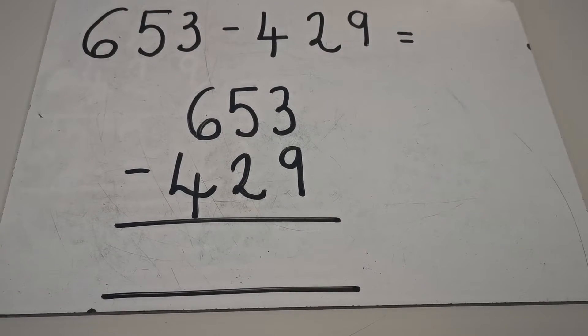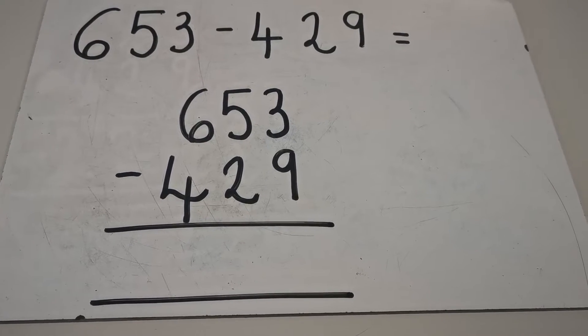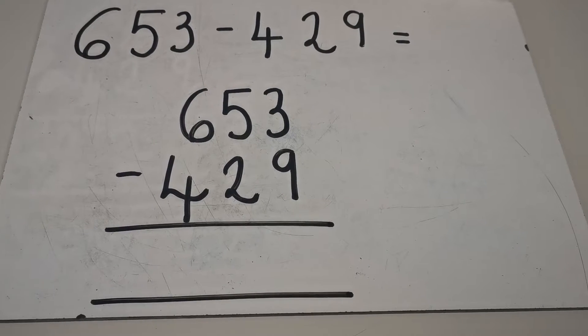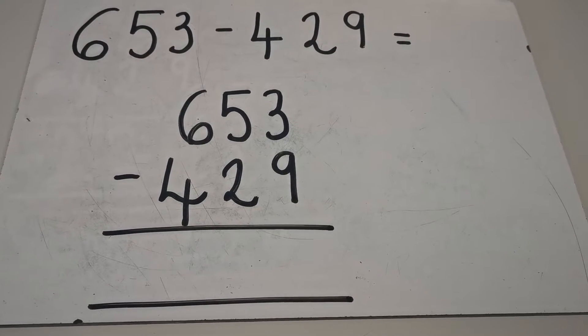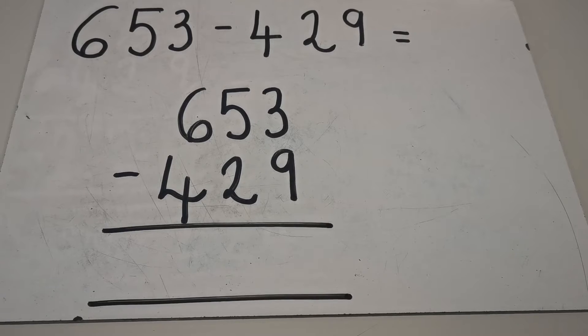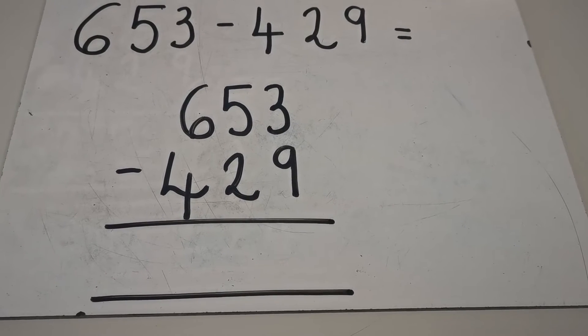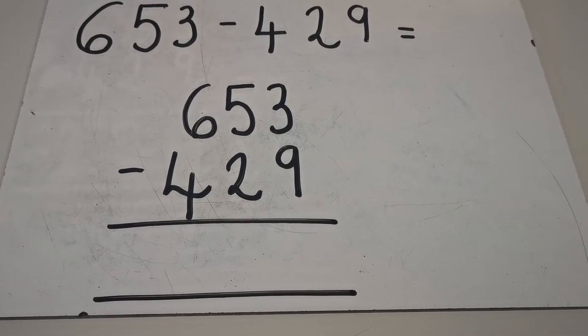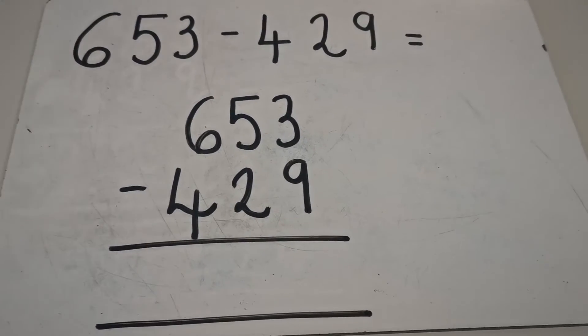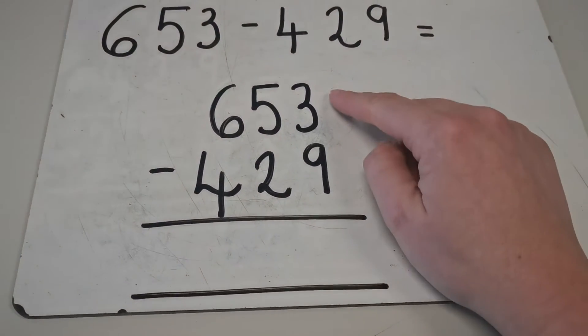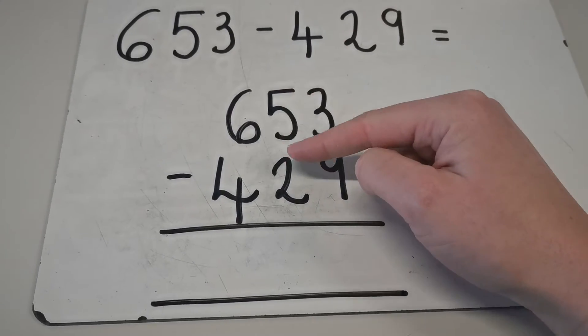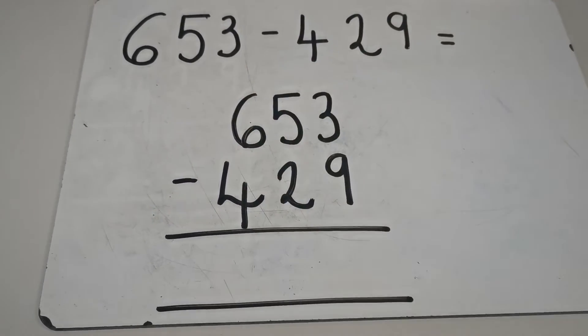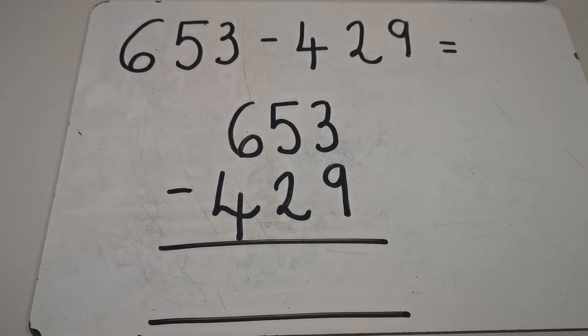And also, just like column addition, we need to place the calculation into columns. So as you can see, 653 subtract 429, I have placed it into the ones column, the tens column, and the hundreds column. Just like our column addition, I'm going to put all my ones together, all my tens together, and all my hundreds together when I'm writing out the calculation.